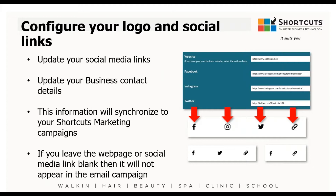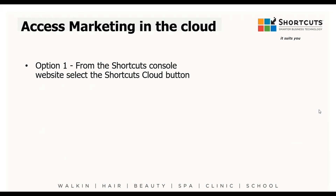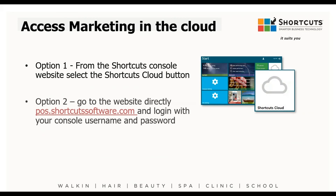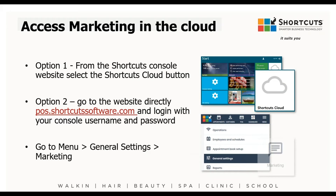If you leave the social links blank then you will have no links at the bottom of the email. To access the marketing feature in cloud, go either into Shortcuts console and click the Shortcuts Cloud button, or go directly to the pos.shortcutssoftware.com website and log in. Your login details will be the same as console, and you can jump straight onto the marketing icon or go to general settings and then marketing.